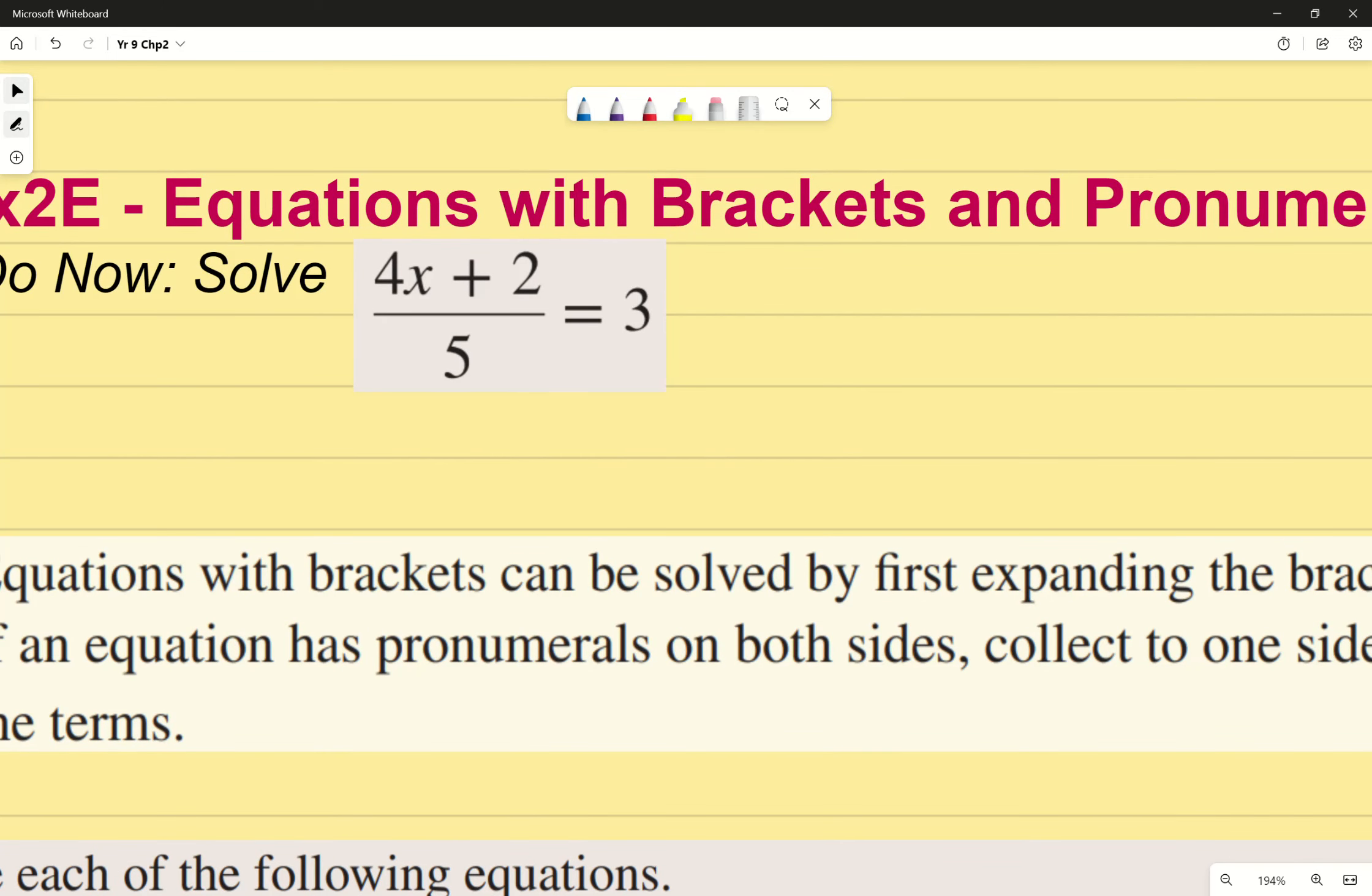Remember the way that I said it last lesson was imagine if I gave you a number to substitute for x, what would you do first? Well then you'd add and then you'd divide by 5. We're going to do the opposite. We're backtracking, remember. So right now it's a divide by 5. To do the opposite and get rid of it I'm going to multiply by 5.